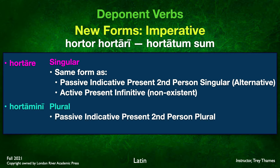For both of these forms — hortare and hortamini — you'll have to let context determine whether this is an imperative singular or plural, or a passive present indicative form second person singular or plural. Hortare as an alternative spelling is rarely seen in the present tense, but more likely it is going to be your imperative. Those are the only two new forms you have to learn for the deponent verbs.